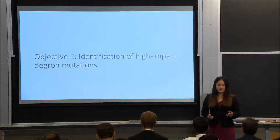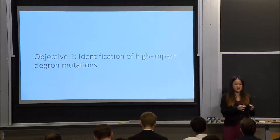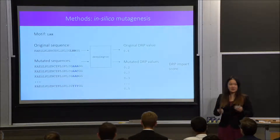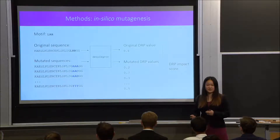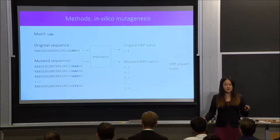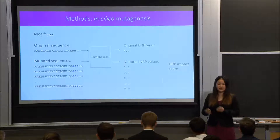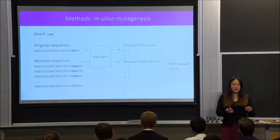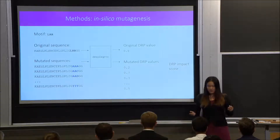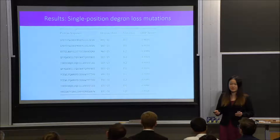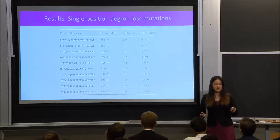Once we identified these motifs, we were interested in seeing which sorts of mutations would cause the greatest impact on these potential degron motifs. We performed in silico mutagenesis, which involves taking all possible mutated sequences, running them through the deep degron model, obtaining DRP scores for each of them, and then calculating mutation impact scores by taking the mutated DRP and subtracting the original DRP. We then identified the top 10 single-position degron loss mutations — mutations that cause a negative impact on the DRP.